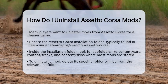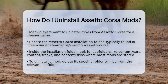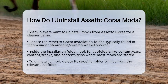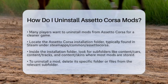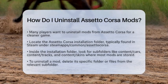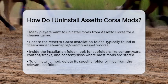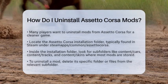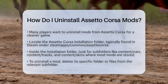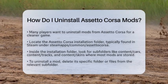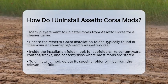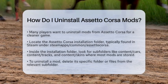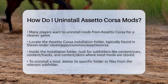First, you need to find the Assetto Corsa installation folder. This is usually located in the Steam folder under Steamapps/common/Assetto Corsa. Inside this folder, you will find subfolders like Content/Cars, Content/Tracks, and Content/Skins. Most mods are installed directly into these directories.